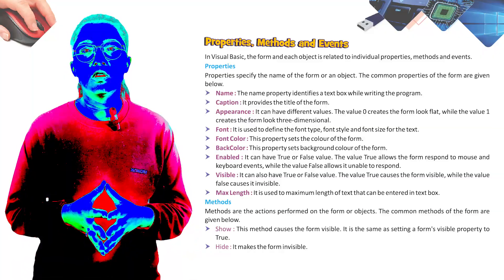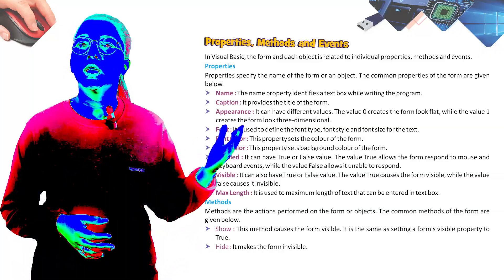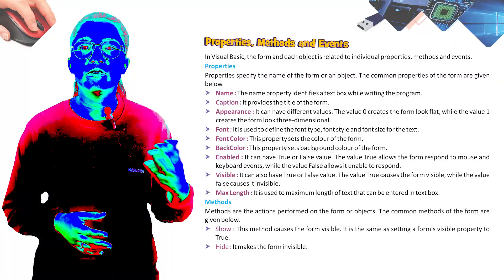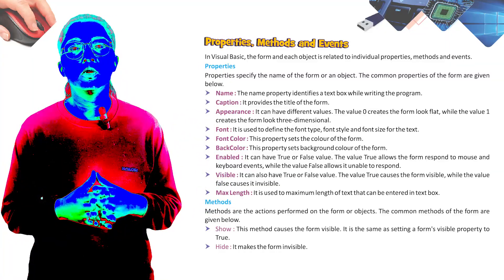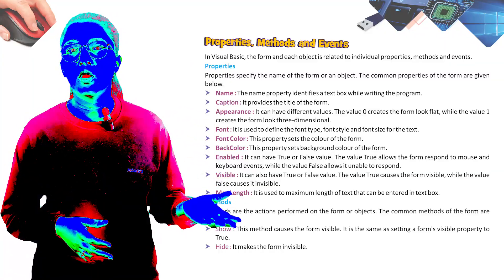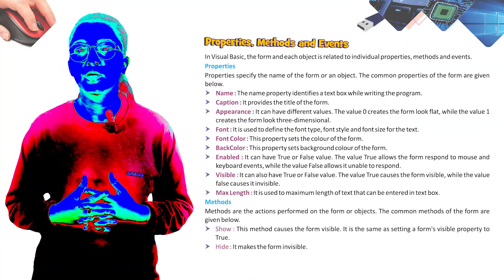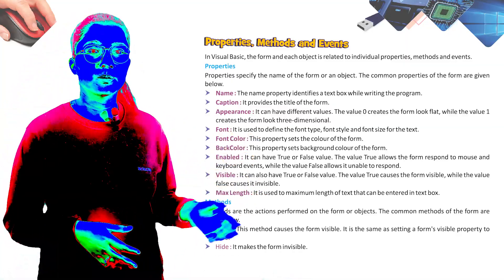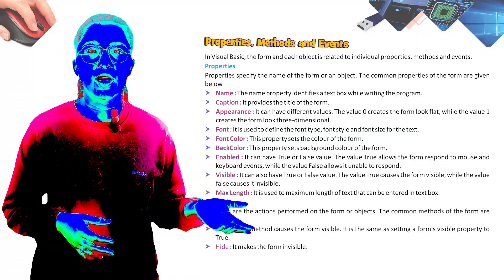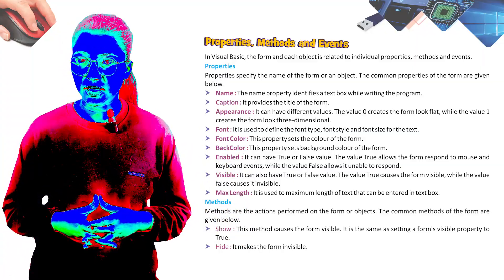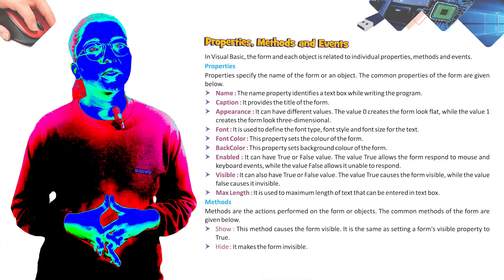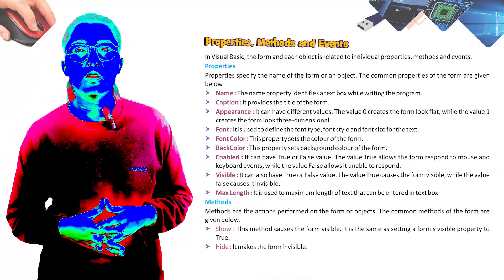Caption provides the title of the form. Appearance can have different values: value 0 creates a flat look while value 1 creates a three-dimensional look. Font is used to define font type, font style, and font size. ForeColor sets the foreground color of the form. BackColor sets the background color of the form.